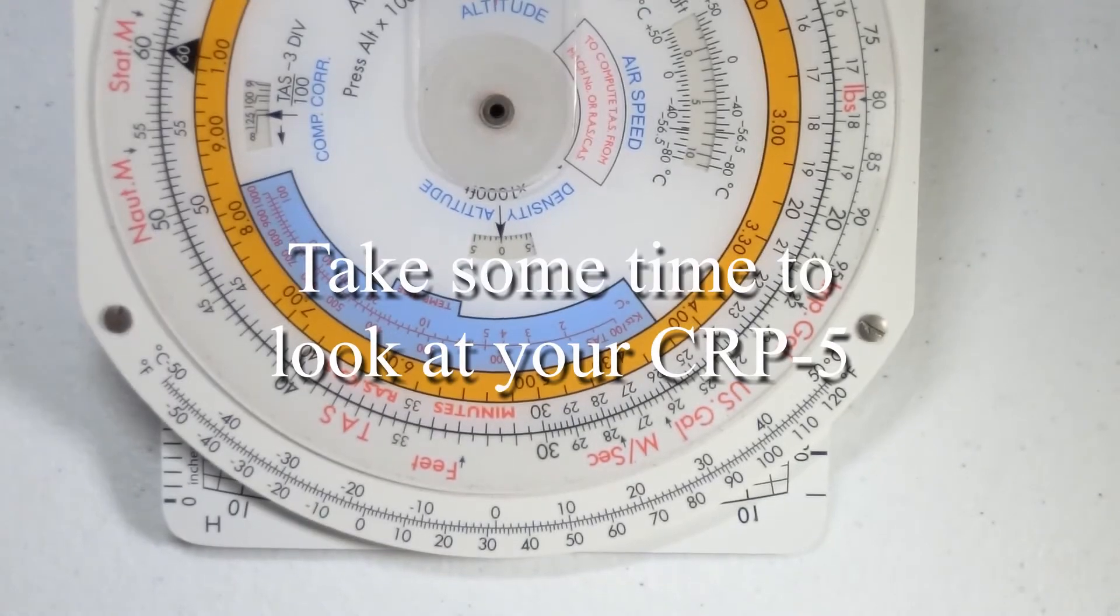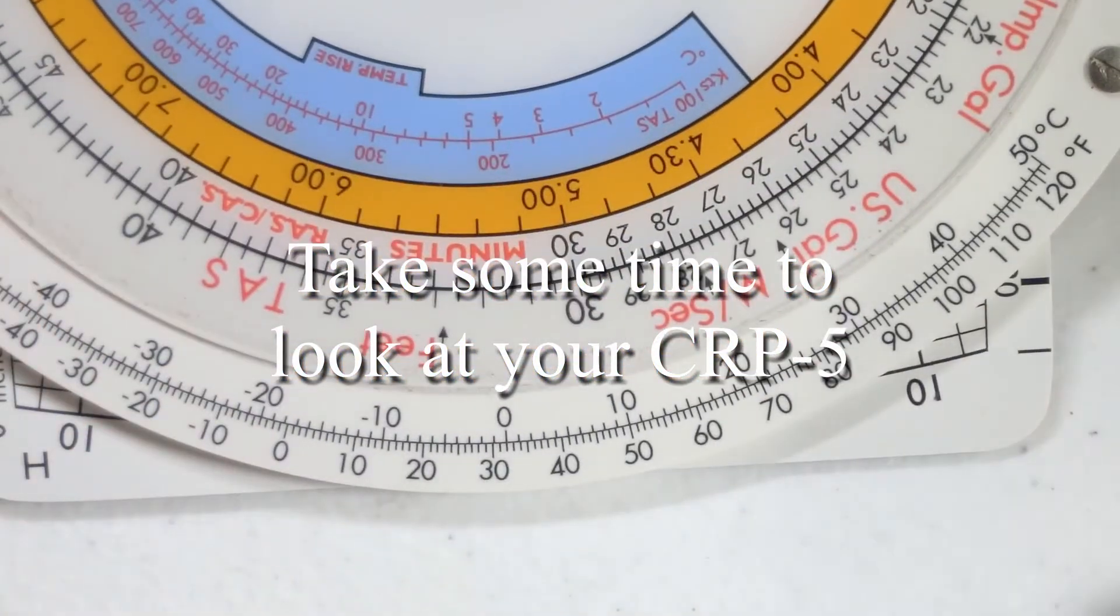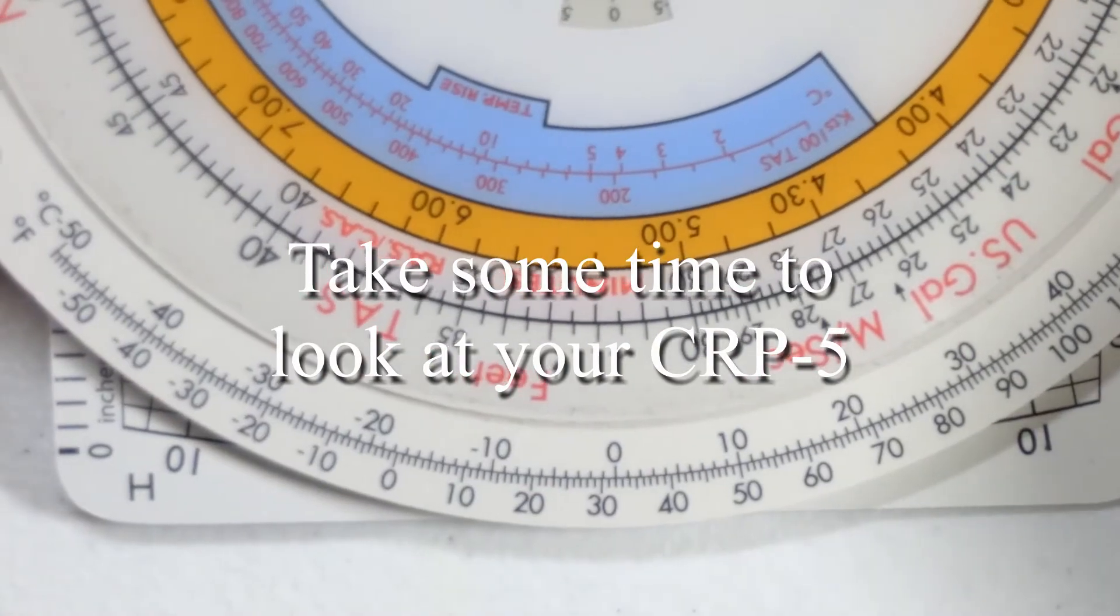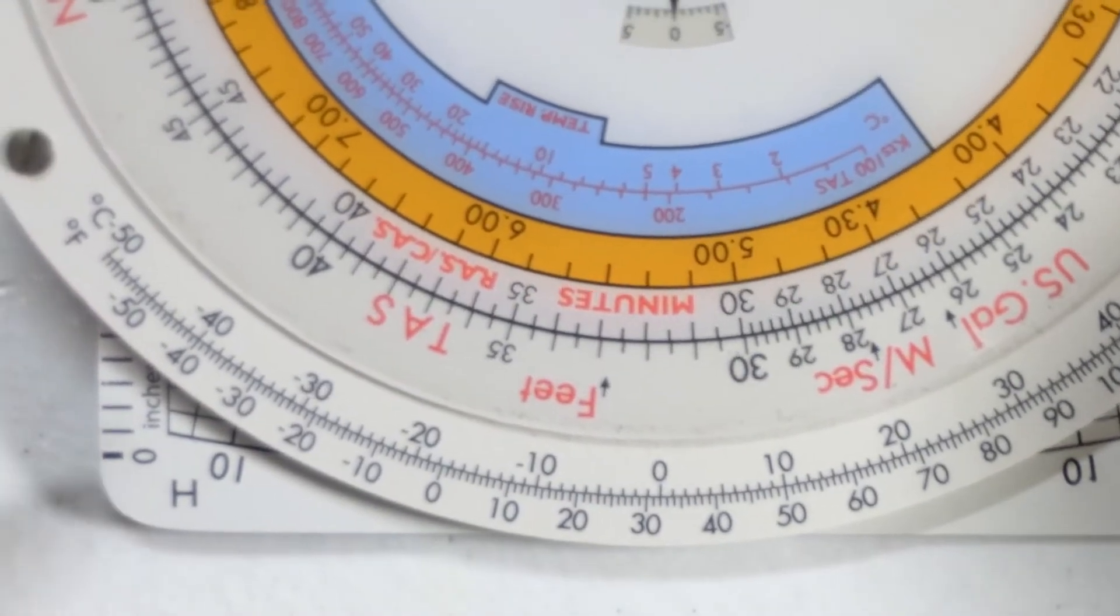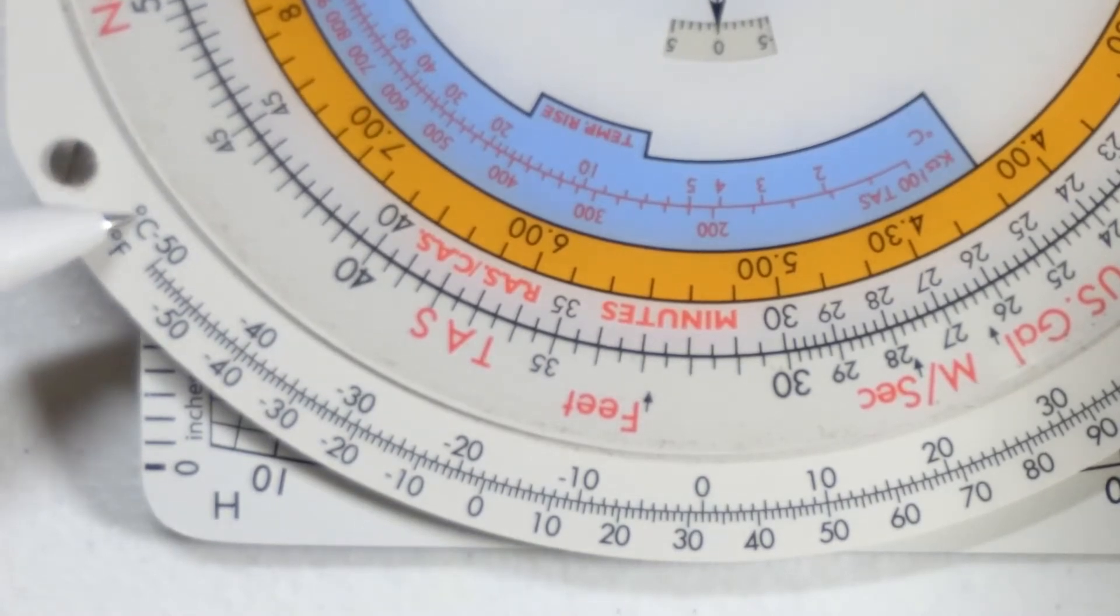So we'll zoom in on the temperature scale and you can get a better look at it. You will find that this scale has degrees Celsius on the top of the scale and degrees Fahrenheit at the bottom of the scale.